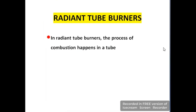The last type is radiant tube burners. In radiant tube burners, the process of combustion happens inside a tube. These are indirect heating burners, meaning the heat is transferred without any direct flame, steam, or combustion exhaust.